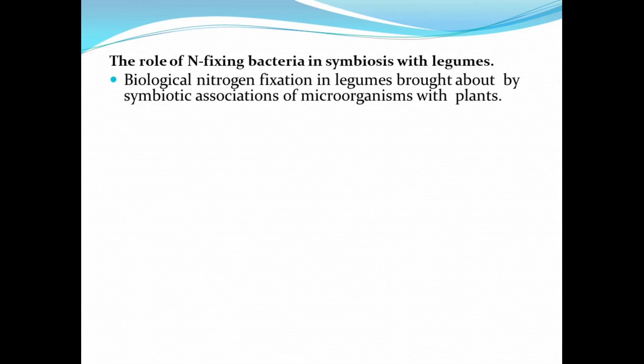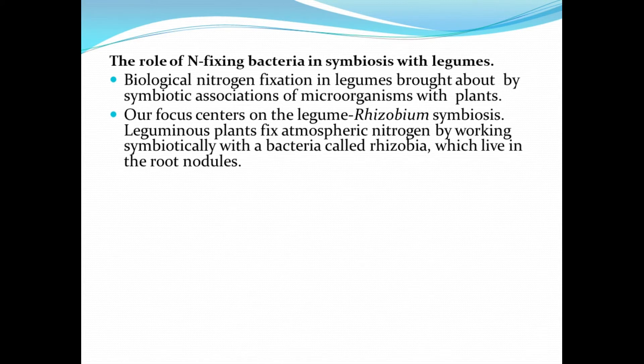Now let's take a look at the role of nitrogen-fixing bacteria in symbiosis with legumes. Biological nitrogen fixation in legumes is brought about by symbiotic associations of microorganisms with plants. Our focus centers on legume-Rhizobium symbiosis. Leguminous plants fix atmospheric nitrogen by working symbiotically with bacteria called Rhizobia, which live in the root nodules.